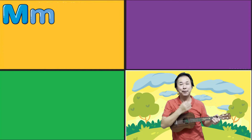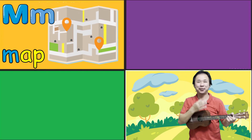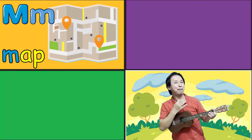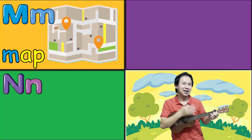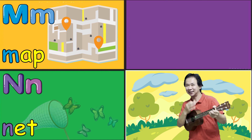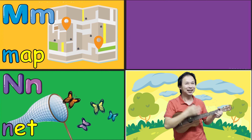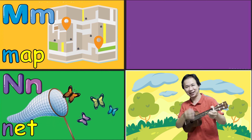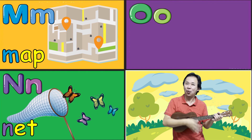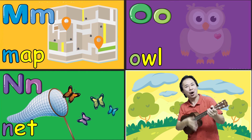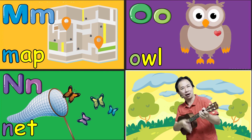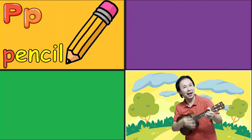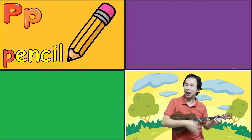M is for map, ma-ma-map. N is for net, n-n-net. O is for owl, o-o-owl. P is for pencil, p-p-pencil.